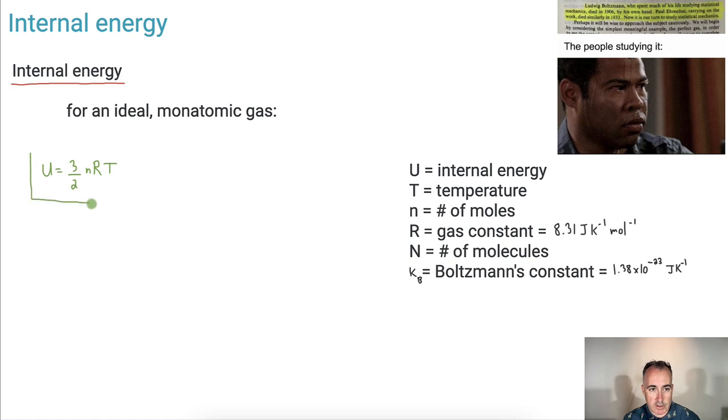This is our first equation. It's in our data booklet. We can also write it in another format using the Boltzmann constant. So U is also equal to three halves times capital N, the number of atoms or molecules, times the Boltzmann's constant times the temperature. Just like with the ideal gas law, we have two different versions because nR equals capital N times kb. This piece right here is the same as that piece right there.